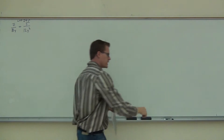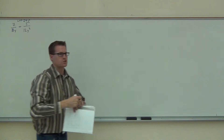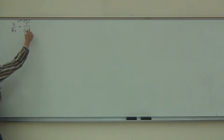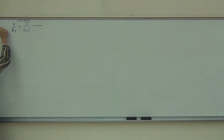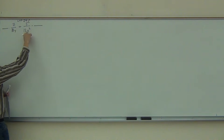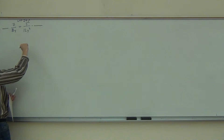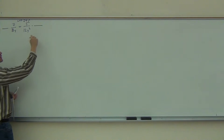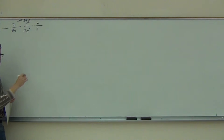That means we need to multiply each of these fractions because right now we don't see 24y squared anywhere. We're going to have to make each of these denominators into 24y squared. Over here, to get from 12y squared to 24y squared, I need to multiply by 2.